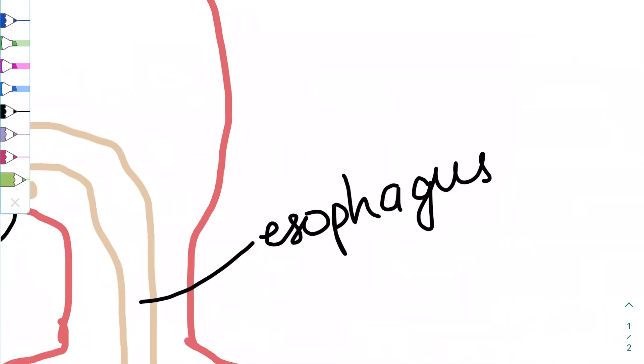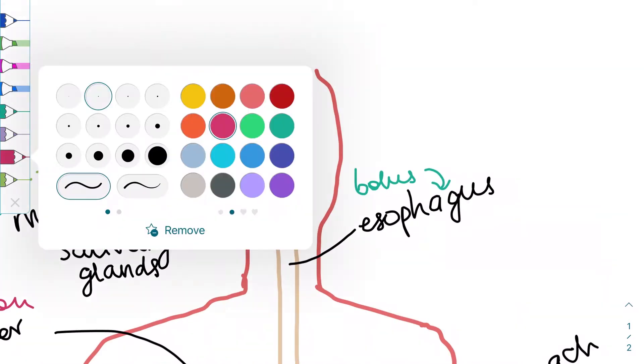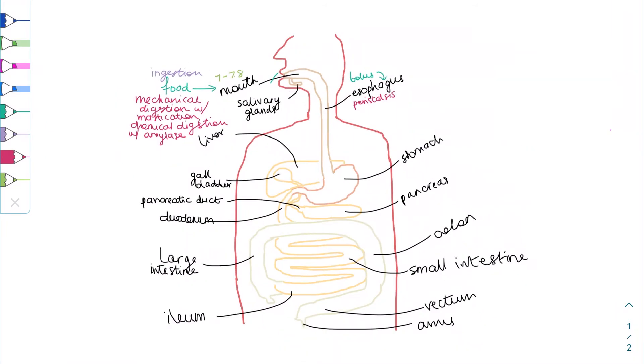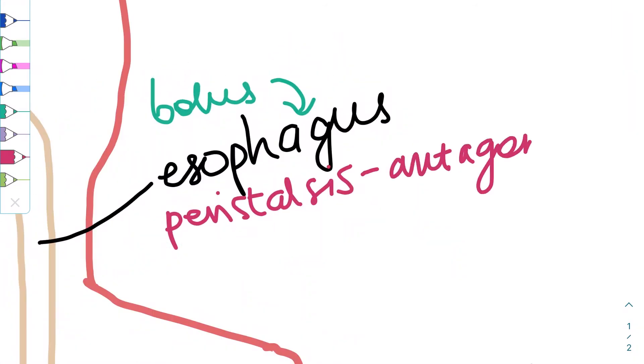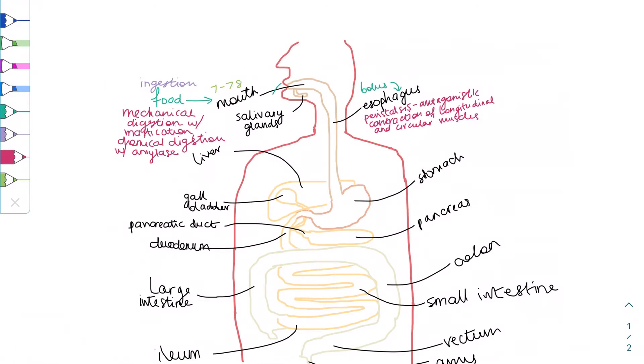Next, this chewed semi-liquid food, now called a bolus, is passed down the esophagus, where it is pushed using movements of smooth muscle into the stomach. This is called peristalsis, which is the coordinated contraction of antagonistic longitudinal and circular muscles. This means that when the longitudinal muscles are relaxed, the circular muscles above the bolus contract.